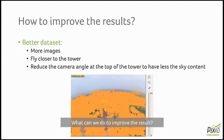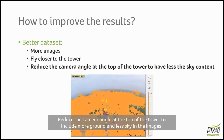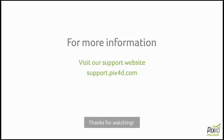So is it possible to improve even more the results? Yes, but you would need a better dataset. You should capture more images, especially in the part where the tower was missing, so you need to increase the overlap. You can also fly closer to the structure in order to capture more detail. And finally, you can also decrease the camera angle at the top of the tower to have less sky content on the images, because the sky cannot be used to calibrate the images. Thank you very much for watching this video tutorial. For more information, visit our support website at support.pix4d.com.